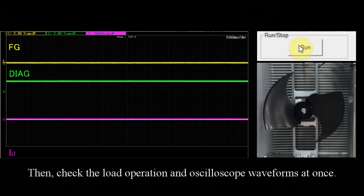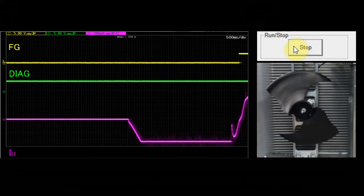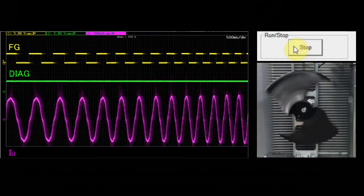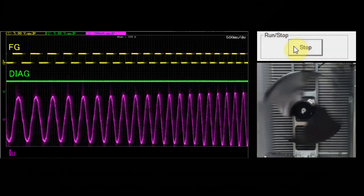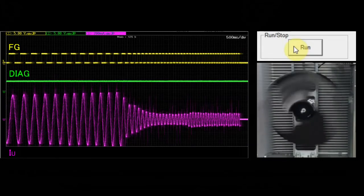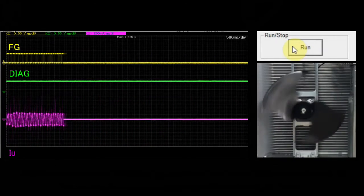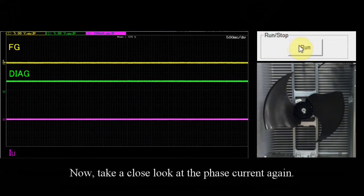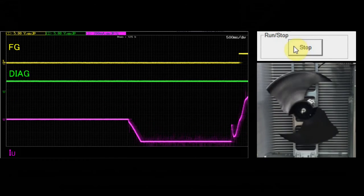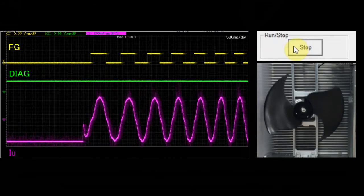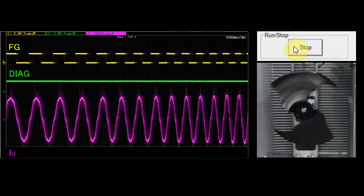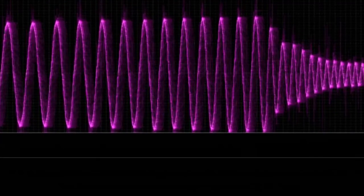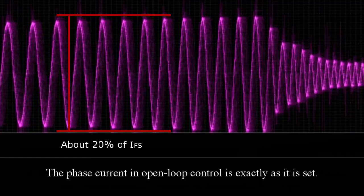Then, check the load operation and oscilloscope waveforms at once. Now, take a close look at the phase current again. The phase current in open loop control is exactly as it is set.